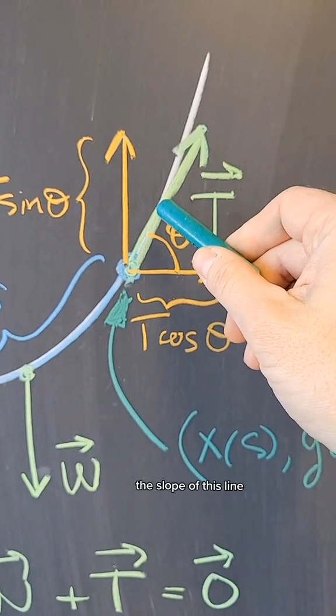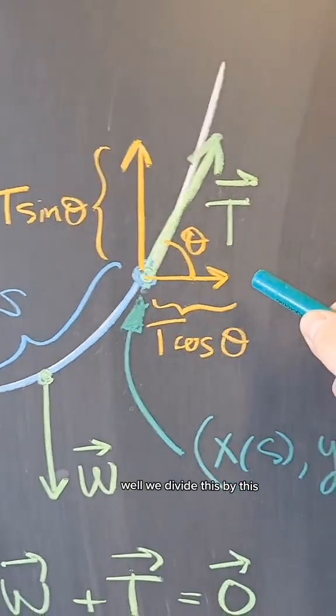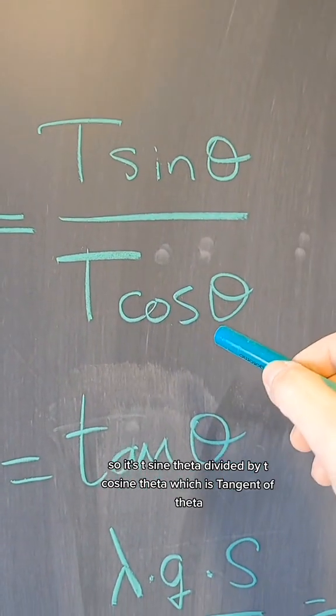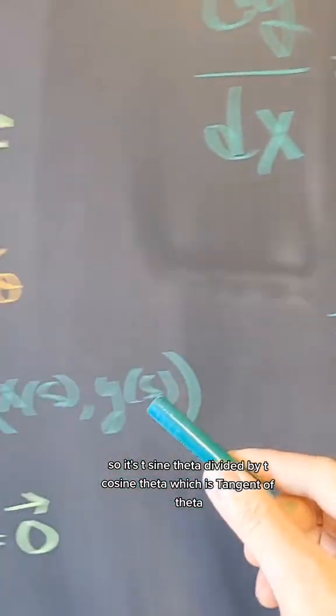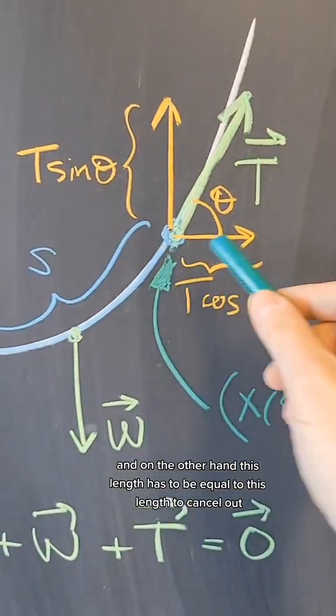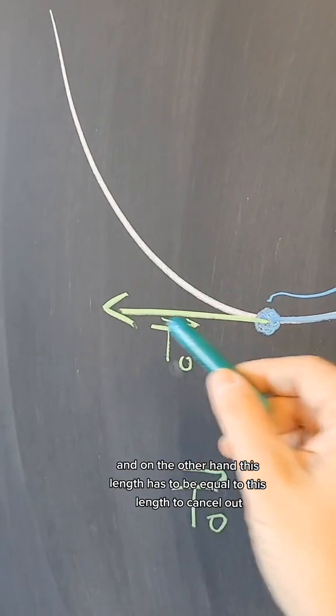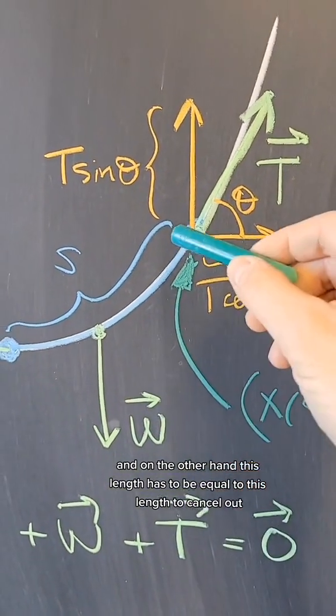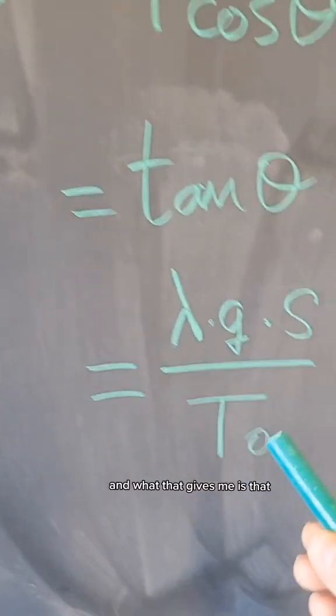To do that we divide this by this, so it is T sine theta divided by T cosine theta, which is tangent of theta. On the other hand, this length has to be equal to this length to cancel out, and this has to be equal to this length.